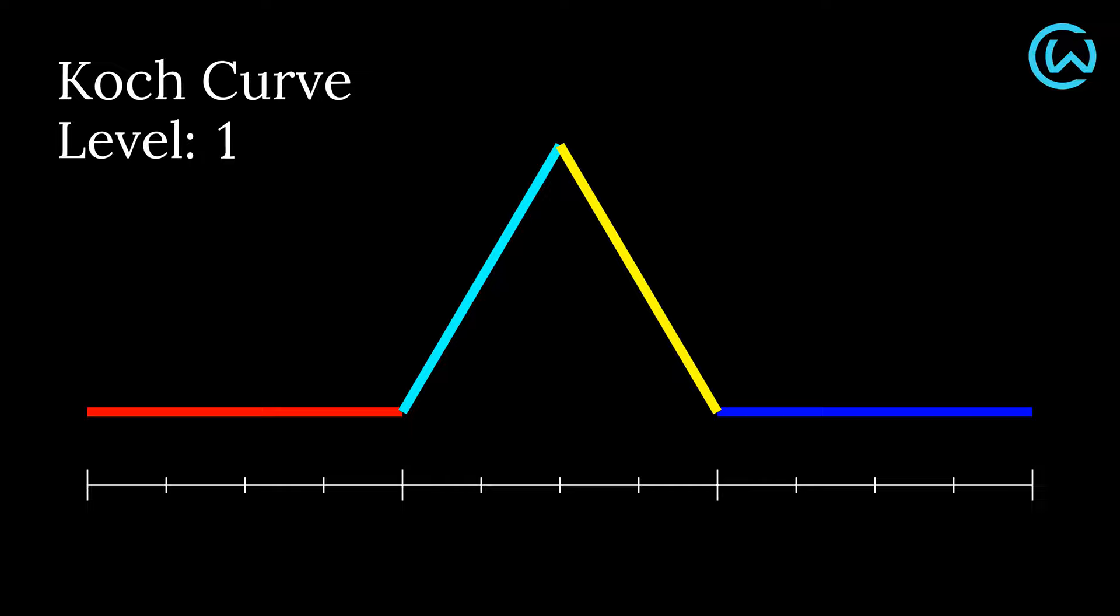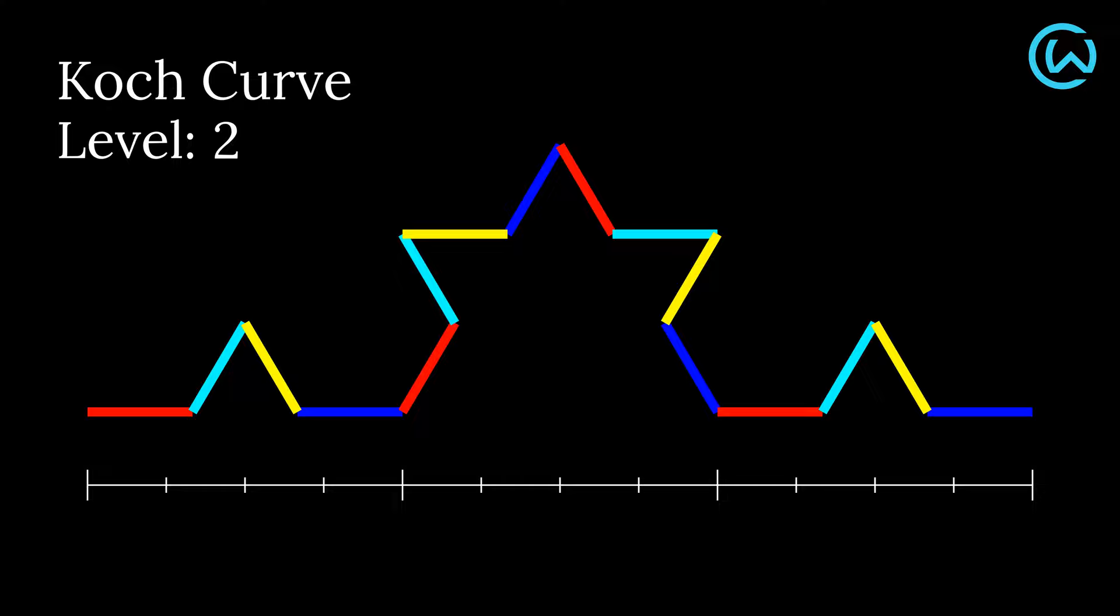For the next level, repeat this process for each of these four line segments. In this way, the Koch curve is constructed recursively by applying this iterative process on each line segment at every level.